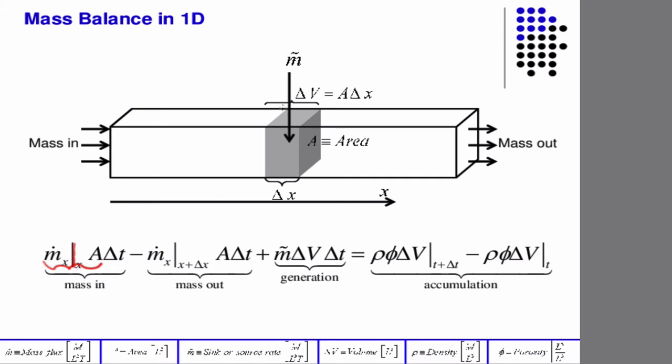So, this is x, this is x plus delta x, right? So the m dot evaluated at x times the area times time gives you the mass going in on this side. M dot evaluated at x plus delta x times the area times time gives you the mass coming out.